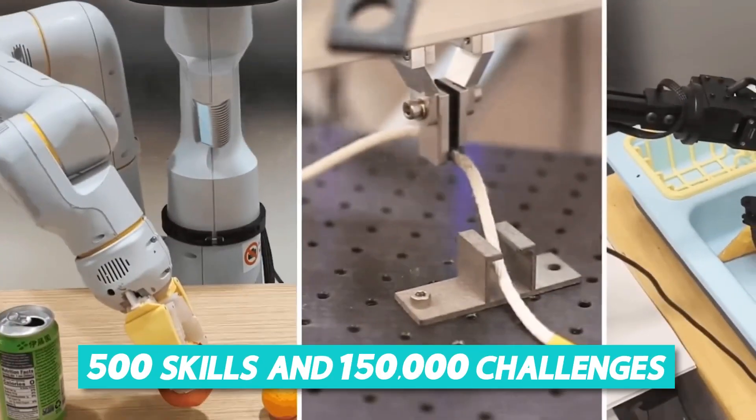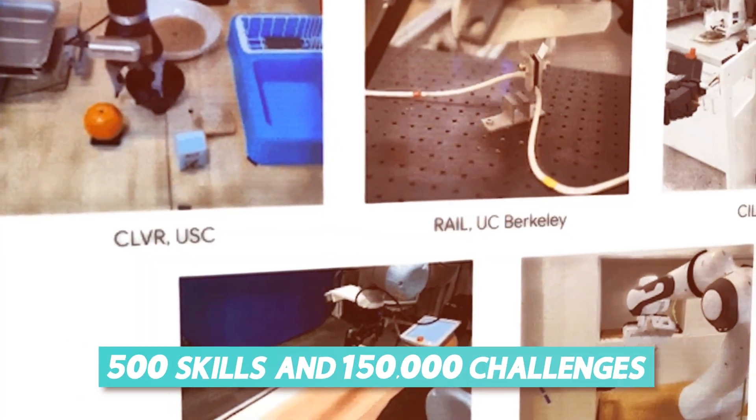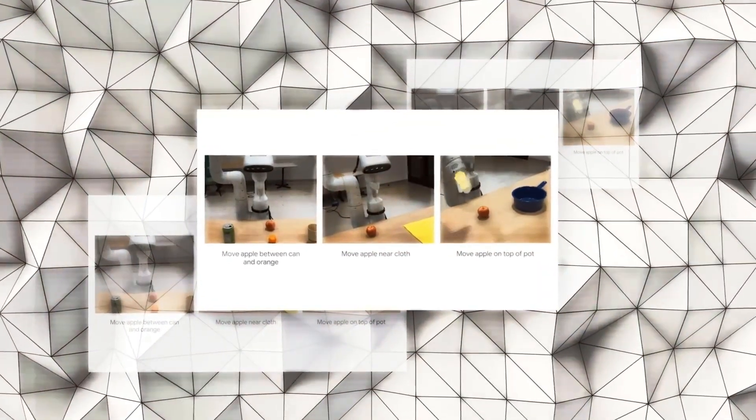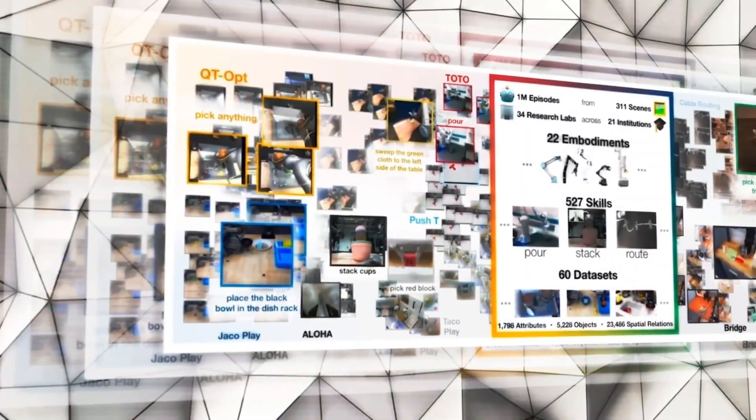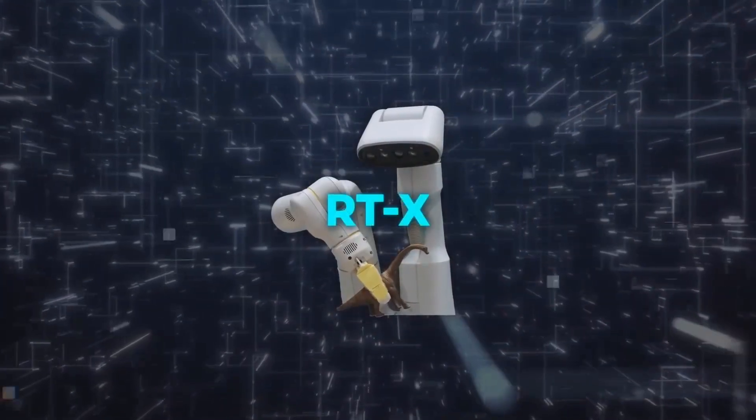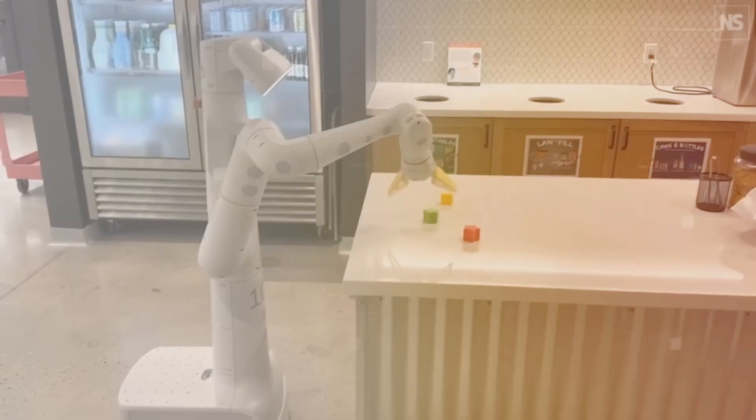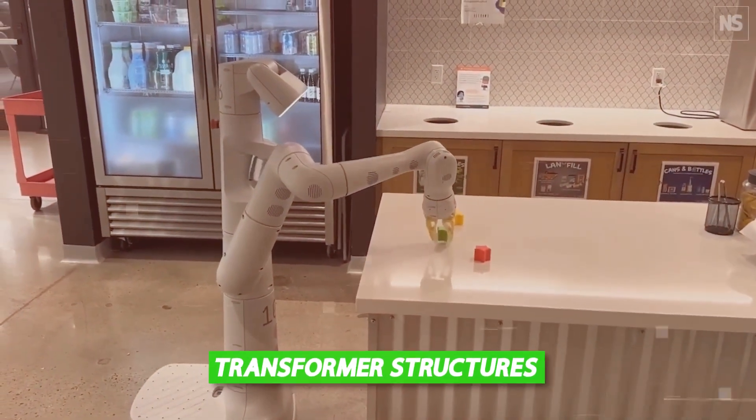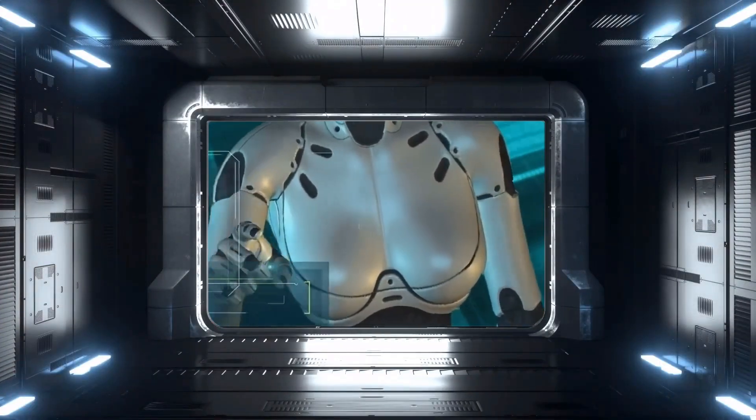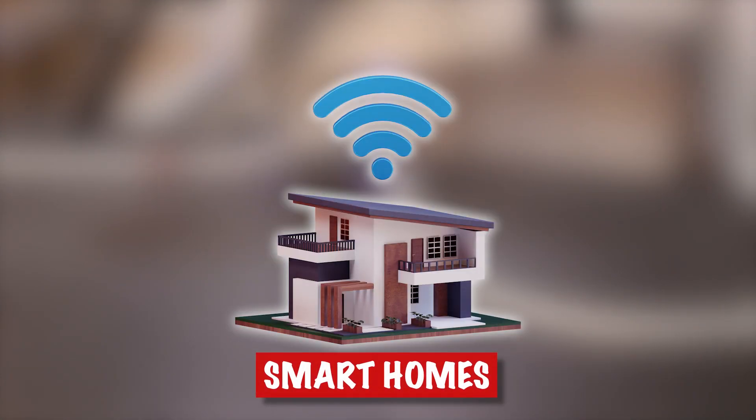With more than 500 skills and 150,000 challenges spanning 22 different robot types, this program aims to establish a large digital playground that will advance robotic learning and adaptability. The RTX model raises the bar for robotic performance by combining cutting-edge technologies like transformer structures and cross-modal learning. This opens the door for smarter and more effective autonomous systems in industries like healthcare and smart homes.